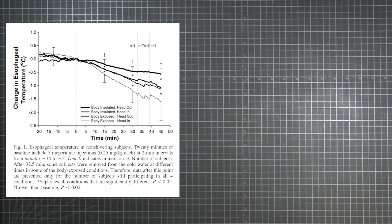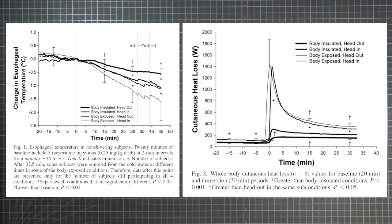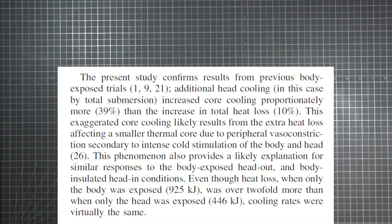So figure one shows the results for all four insulated exposed head in head out test conditions. And if we compare the core temperature graph to the skin graph, you can sort of see what's coming. They're different scales, obviously. We're only talking about the proportional differences. Still, you can tell that having the head exposed had a bigger effect on core temperature than it did to surface heat loss, relatively speaking. So the authors state, the present study confirms results from previous body exposed trials. Additional head cooling, in this case by total submersion, increased core cooling proportionately more than the increase in total heat loss.